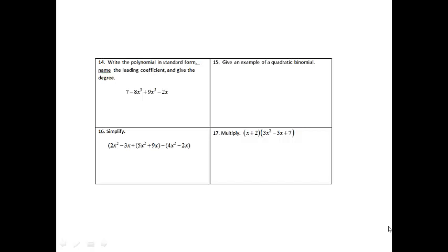So problem 14, write the polynomial in standard form, name the leading coefficient, and give the degree. Okay, standard form means highest degree to lowest degree. And the degree is just the power, so the highest power is to the 5th, so we'll have 9x to the 5th. And then the next one is to the 3rd, so minus 8x cubed. And then the next one is the power of 1, so it'll be minus 2x, and then plus 7. Okay, the leading coefficient is the number that's leading the problem, so the number that's leading the problem is 9. And then the degree is the highest power, and the highest power is 5.